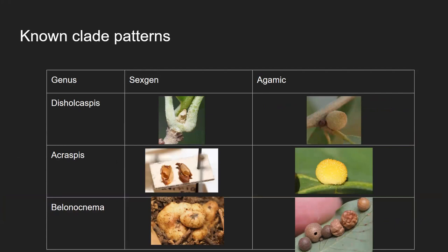Here are a couple of examples of cases where we know for sure what both generations look like. I mentioned already Belonocnema — the sexual generation in the roots and the leaf gall on the underside of the leaves. And then two more familiar ones for you in Massachusetts: Disholcaspis on white oaks, and also on white oaks the Acraspis group — the hedgehog gall — also on leaves as detachable leaf galls. The sexual generation is again a very cryptic ephemeral bud gall; those galls are attached, part of the bud scale.